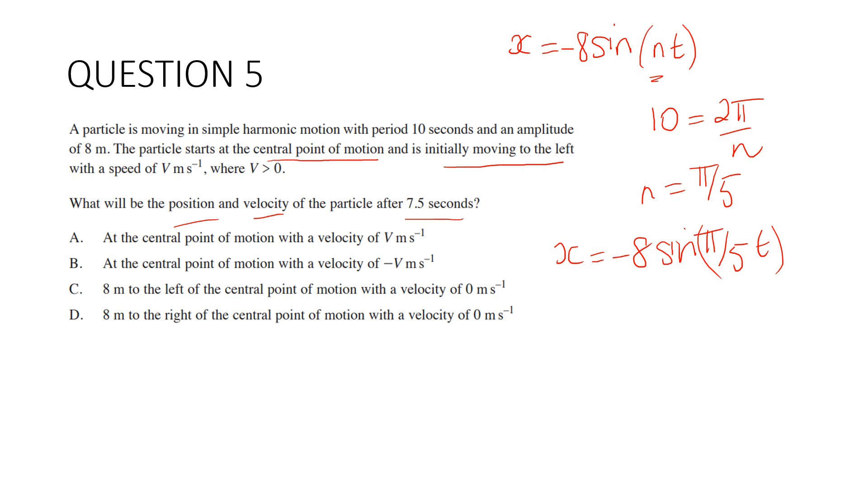So x equals negative 8 sine (π/5 times 7.5), which equals negative 8 sine (3π/2). That's negative 8 multiplied by negative 1, which is 8. So that means it's 8 meters to the right of the central point of motion. And the only one that's possible then is D.